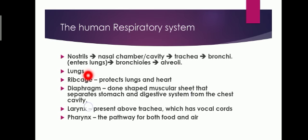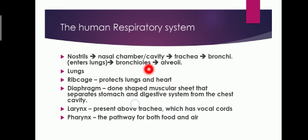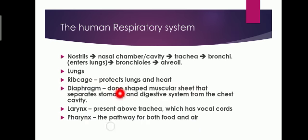The lungs are a spongy organ present in the chest region of a human being, and they help in the process of respiration or exchange of gases. Then comes the ribcage — ribcage protects the lungs and heart. It is a bony box inside which the lungs and heart are protected. One more structure is the diaphragm, which is a muscular sheath that separates the stomach and digestive system from the chest cavity.